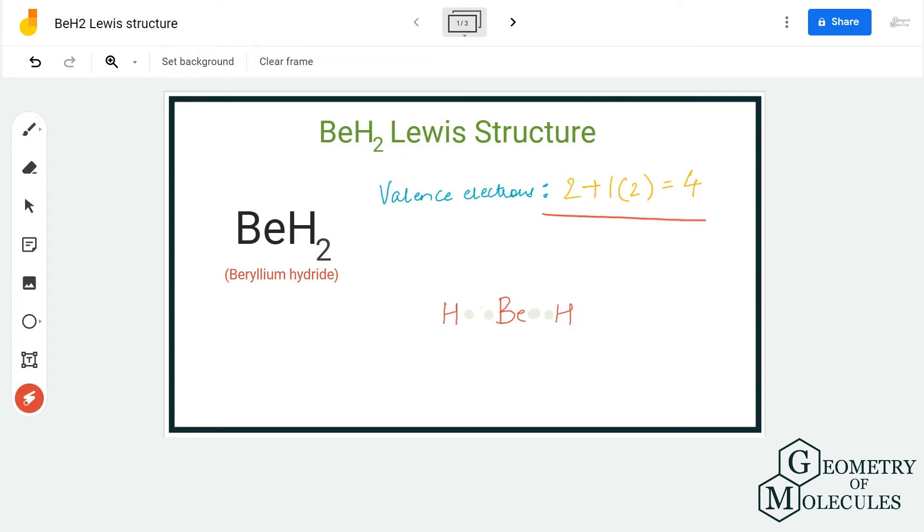Now after that you have to check the octets for all the atoms to see if this is the stable Lewis structure for BeH2. Here hydrogen has complete octets because it has two valence electrons in its outer shell.